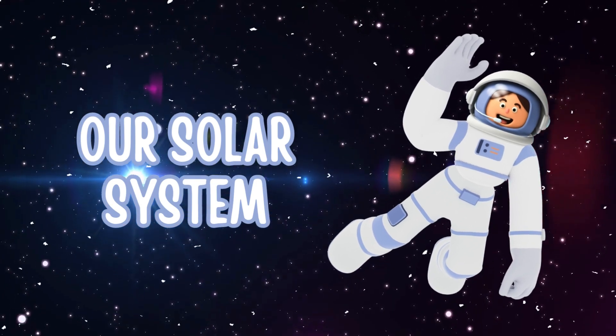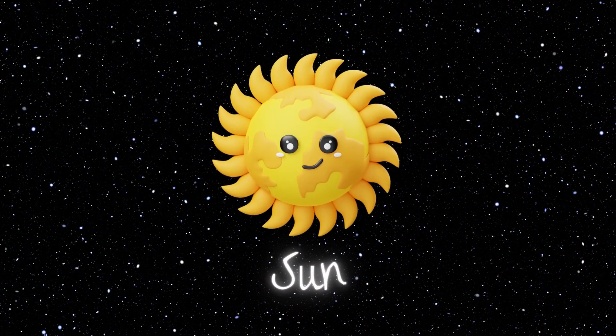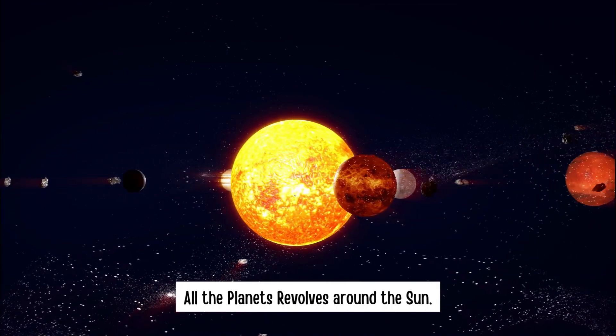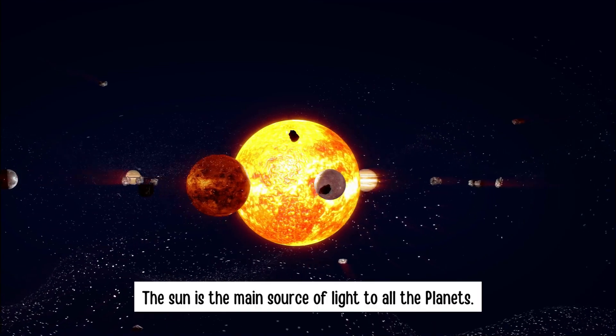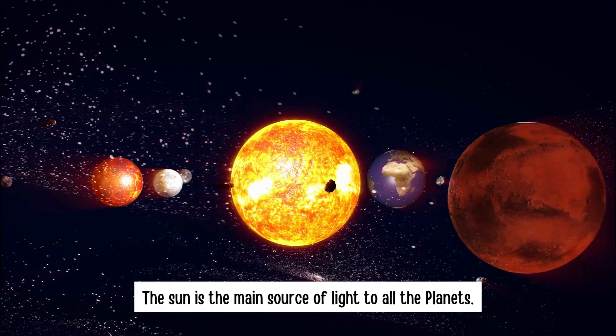Our solar system. The Sun. All the planets revolve around the sun. The sun is the main source of light to all the planets.